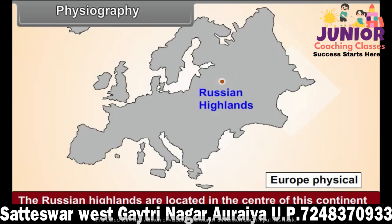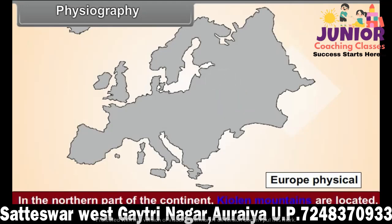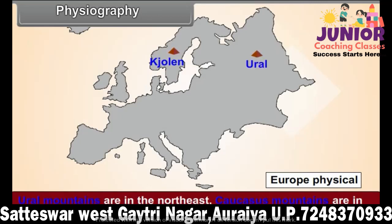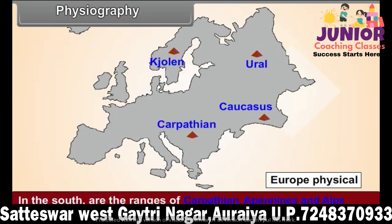Physiography: In the northern part of the continent, the Scandinavian Mountains are located. Ural Mountains are in the northeast. Caucasus Mountains are in the southeast. In the south are the ranges of Carpathian, Apennines and Alps Mountains. See color figure 4 and answer the following questions.